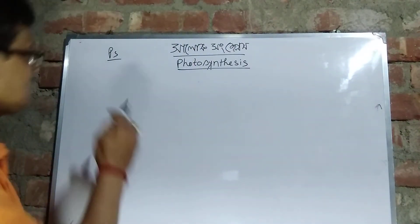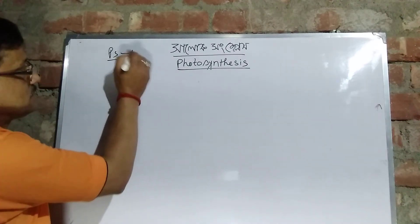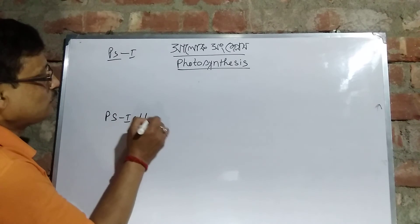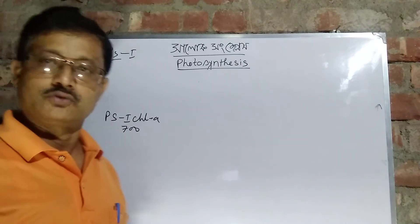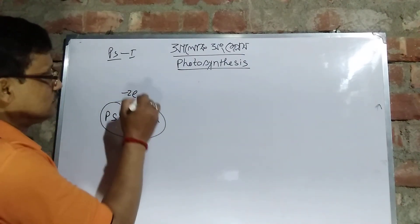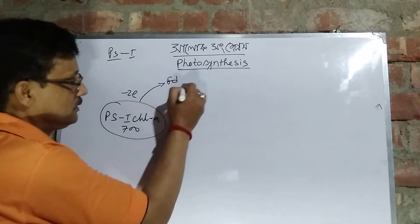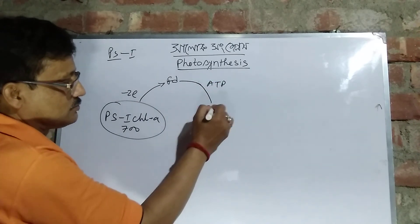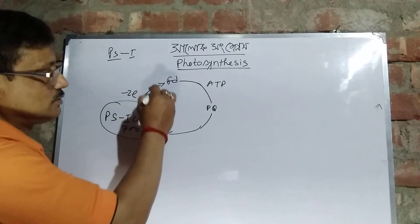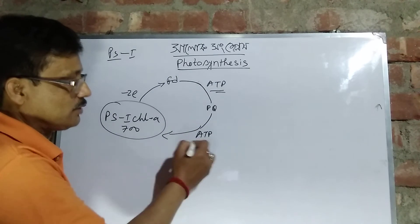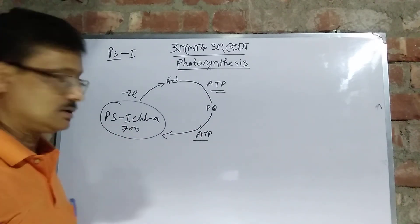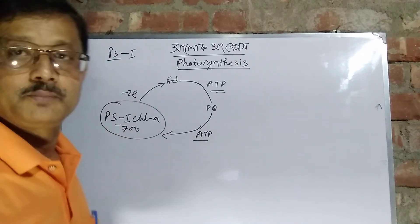This is called PS1 and PS2. PS1 and PS2 are the main pigment systems. We often have ferredoxin and we use ATP. As you can use the ATP to get into this process, the ATP is also involved. This is the cyclic and non-cyclic photophosphorylation.